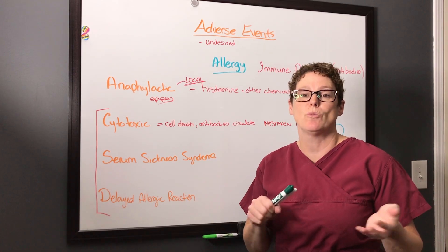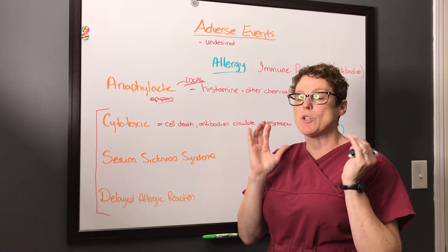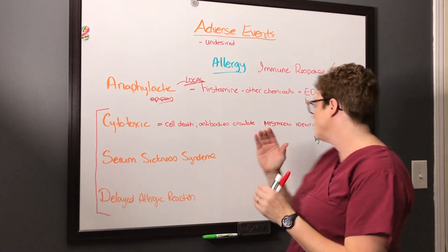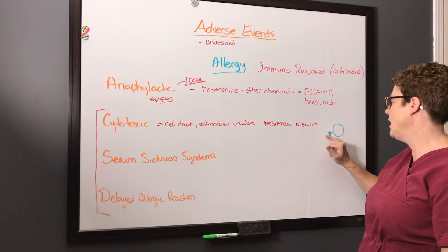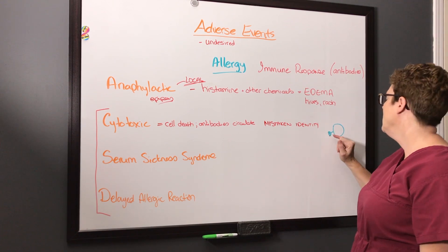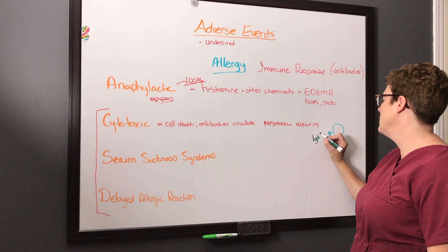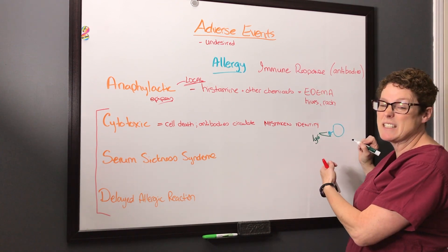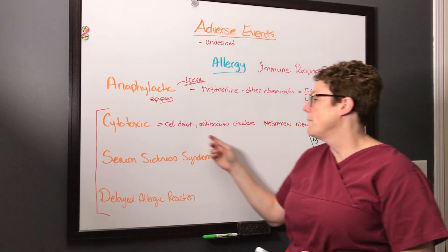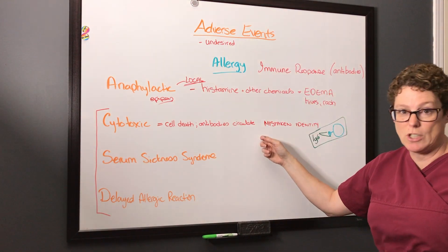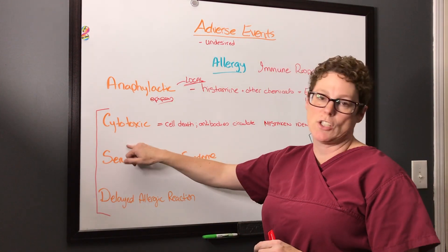In cytotoxic allergic reactions, cell death occurs due to a case of mistaken identity. The medication has bound to the cell at its receptor site — for example, an antibiotic binding to the target cell. IgG, one of our immunoglobulins, comes along and mistakenly identifies the medication-cell complex as a foreign body and destroys it. Cytotoxic antibodies circulate, mistakenly identifying the good guys as bad guys and destroying them. We often see this show up in blood work.